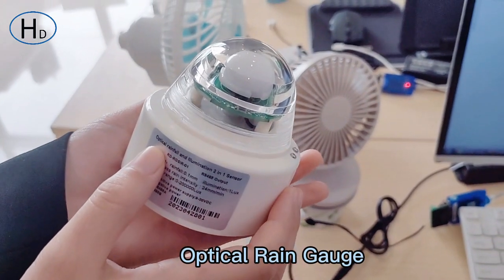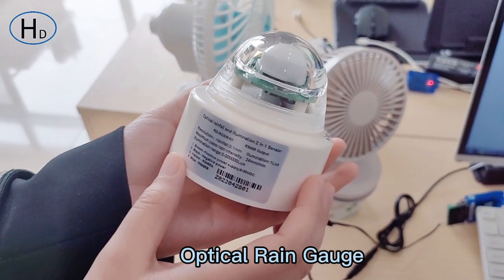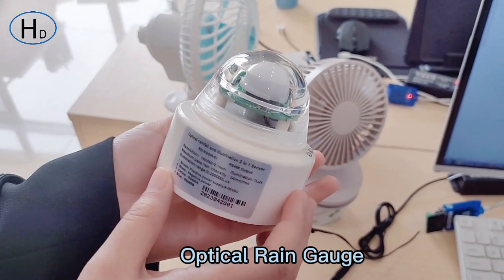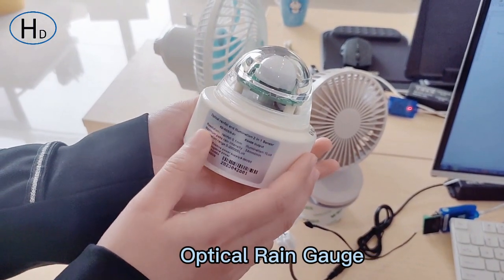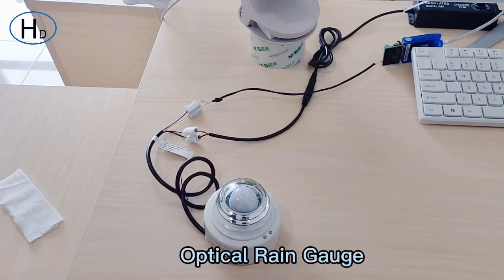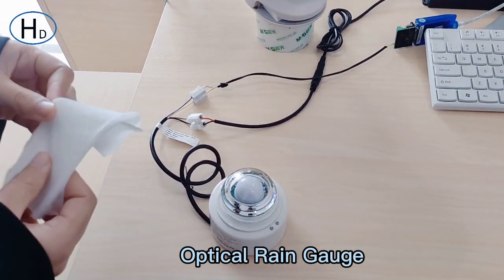It uses the IR optical principle and can measure rainfall and illumination at the same time. It is small size with high accuracy and saves volume. We will do two tests with the help of a wet wipe and sunshine.